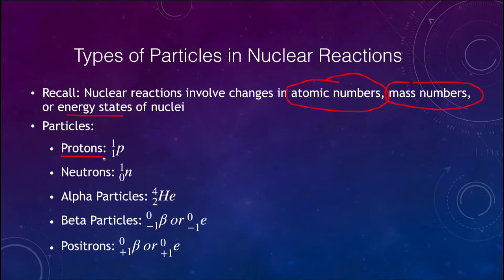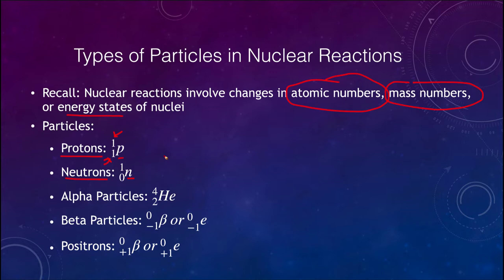Common particles include protons, which would be written with a superscript and subscript of both one with a lowercase p. Neutrons would have a superscript of one and a subscript of zero preceding the lowercase n for neutron. When looking at these numbers, the mass number is at the top, the atomic number is at the bottom, and the element or compound follows. Alpha particles are helium nuclei, written as He with a superscript of four and a subscript of two.